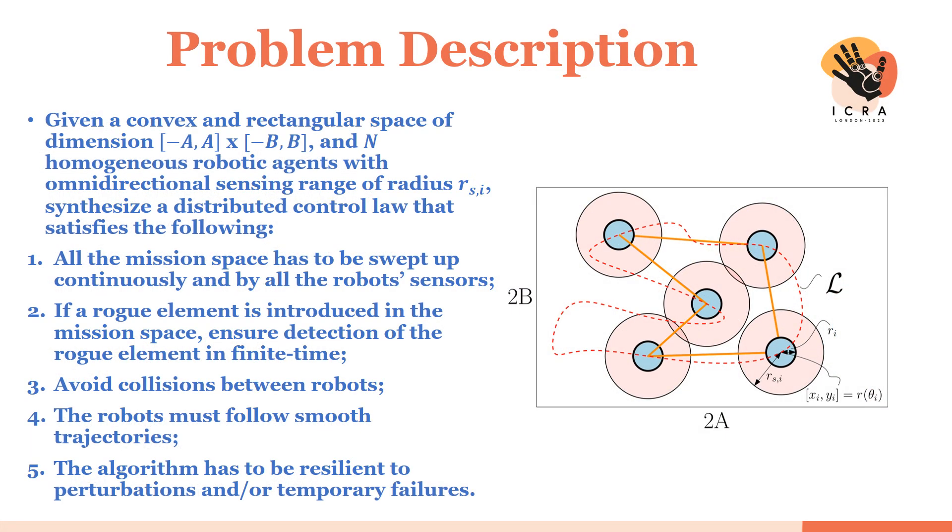Let's start with the problem description. Given a convex and rectangular mission space and homogeneous robotic agents with omnidirectional sensing capabilities, we want to synthesize a distributed control law that satisfies the following.